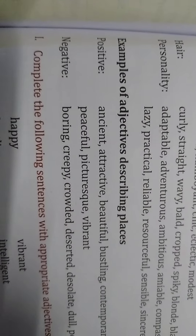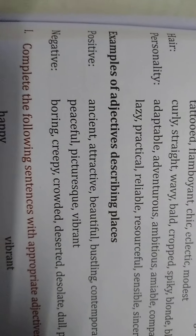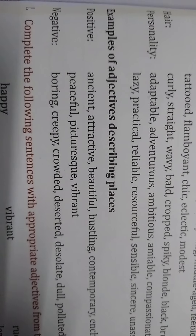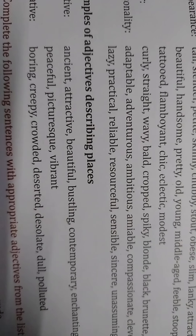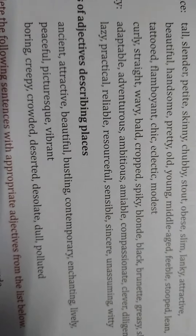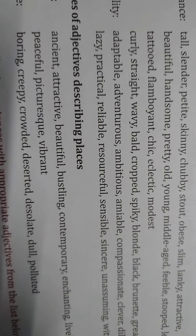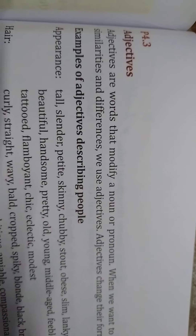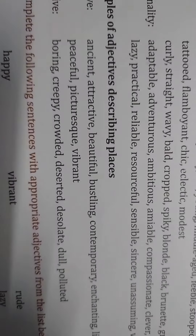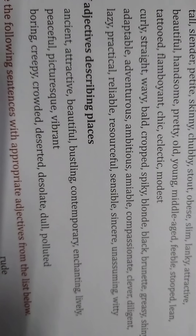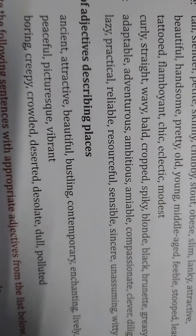If you want to say something negative about a place, use: boring, creepy, crowded, deserted, desolate, dull, polluted. To talk about a person we use appearance/personality adjectives; to talk about places we use these place adjectives.